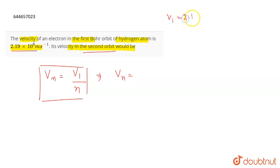So Vn will be equal to V1. V1 in the question is given to you as 2.19 × 10^6. This will be equal to 2.19 × 10^6 divided by...